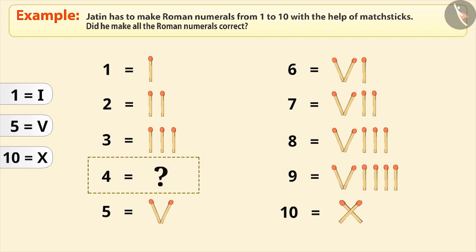So, how do we write 4? Since 5 minus 1 is equal to 4, we write the symbol of 1 to the left of the symbol of 5.